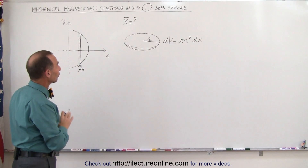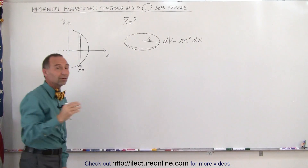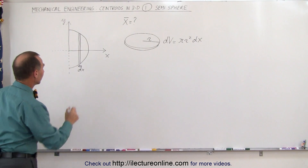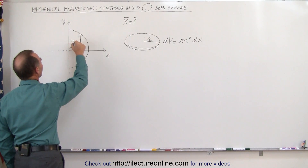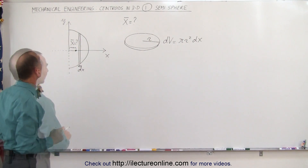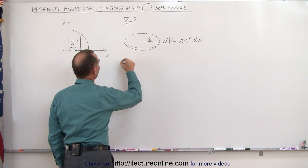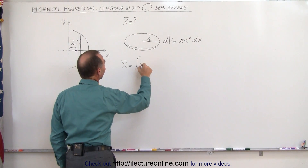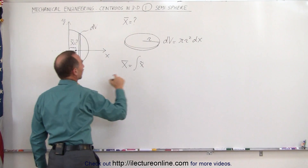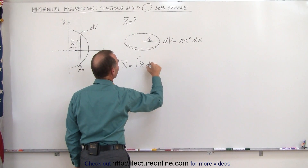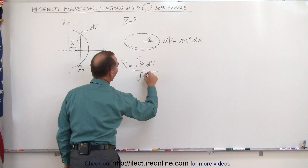We're going to need that little volume element in just a moment. What we're trying to find is the x-coordinate of the centroid of this semi-sphere — it'll be somewhere in this position. We're trying to find out what this distance is: x equals question mark. To find that, we have to remember that the equation for the centroid is: the x-coordinate of the centroid equals the integral of the x-coordinate of each small dv, multiplied by dv, integrated over the entire volume of the semi-sphere, divided by the integral of dv.